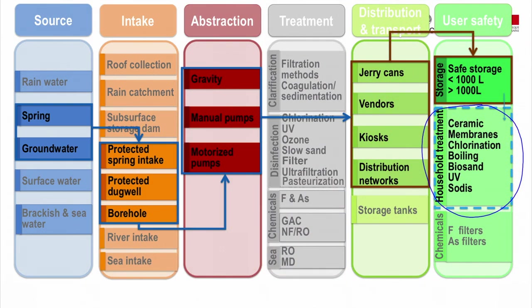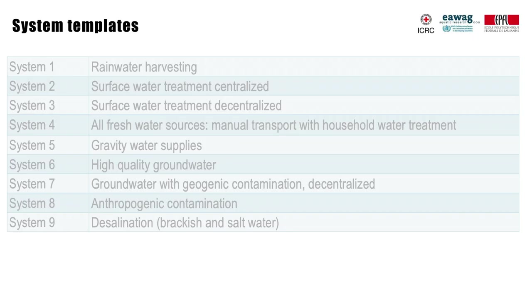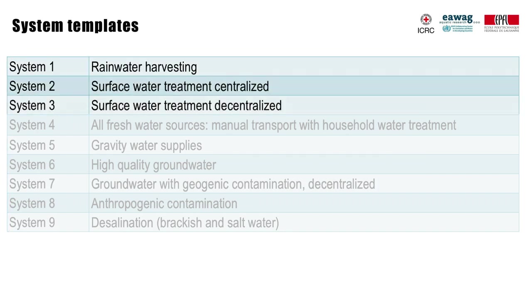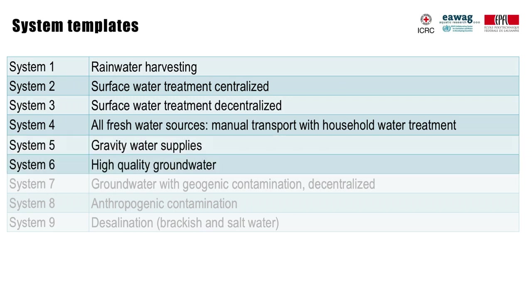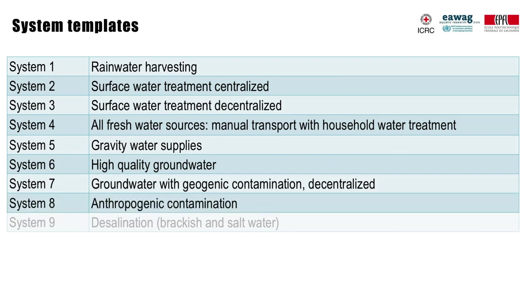What you have seen on this and past slides are the system templates. This kind of system template can be developed for different settings. In general, we define nine major different system templates: rainwater harvesting, surface water treatment centralized and decentralized, all freshwater sources which are manually transported with household water treatment afterwards, gravity water supplies, high-quality groundwater, groundwater with geogenic contamination, water polluted by anthropogenic contamination, and desalination.